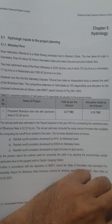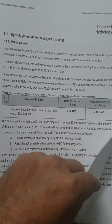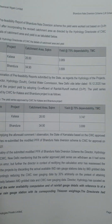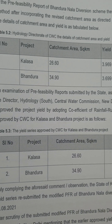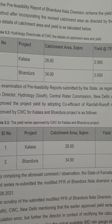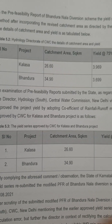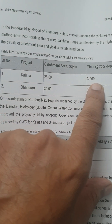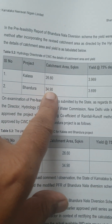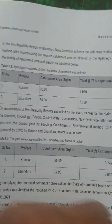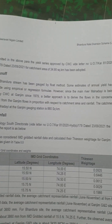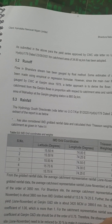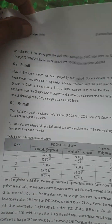In this hydrology chapter, we discuss Bandura Nala. The CWC (Central Water Commission) data gives the area as 26 square kilometers and the yield as 3.96 TMC feet for Bandura Nala. The standard parameters for runoff and rainfall have been used, and we check how much the competition criteria are passed.